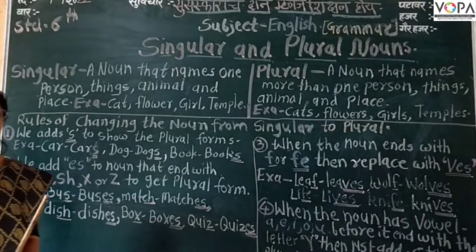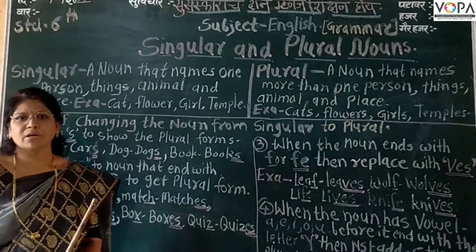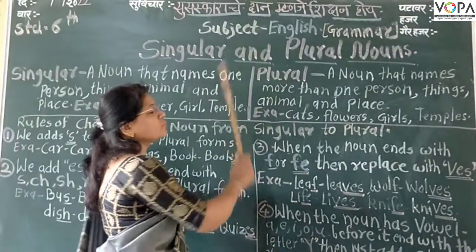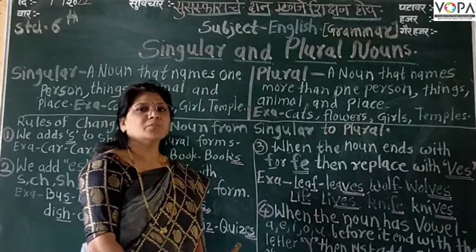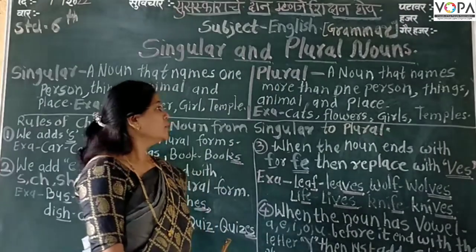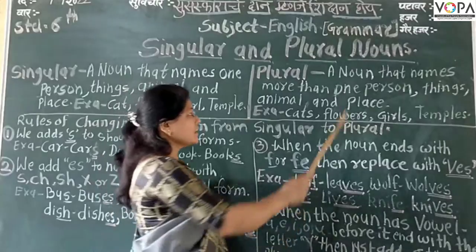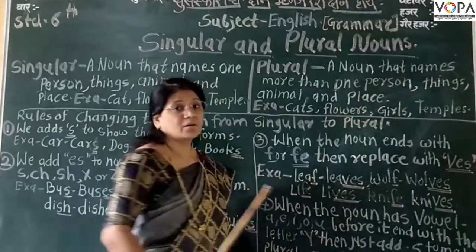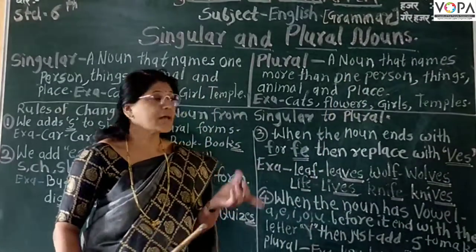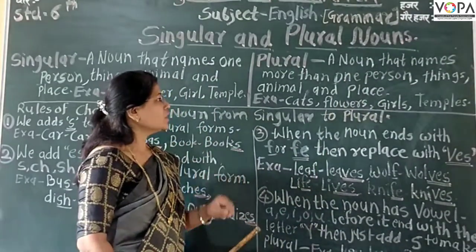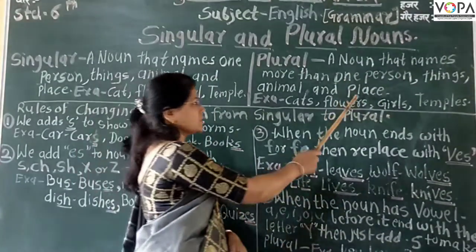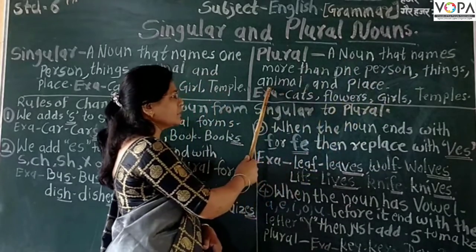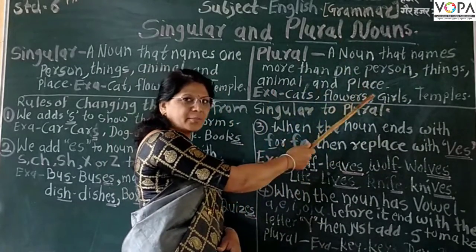What is the plural? The plural noun is a noun that names more than one person, place, animal, or thing.